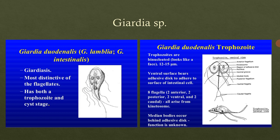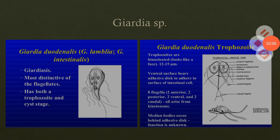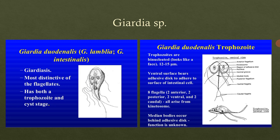First, we will look at the morphological properties. Giardia duodenalis can also be called Giardia intestinalis or Giardia lamblia. These species are responsible for causing Giardiasis and are the most distinctive of the flagellates. Giardia lamblia or Giardia intestinalis is a distinctive species among the flagellates — it is very unique due to its flagellated properties and structure.